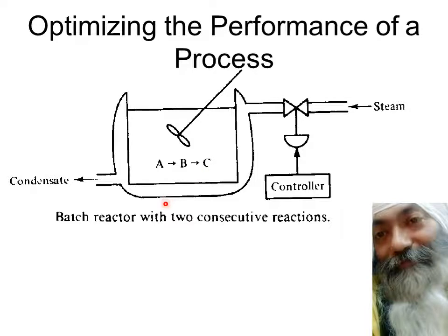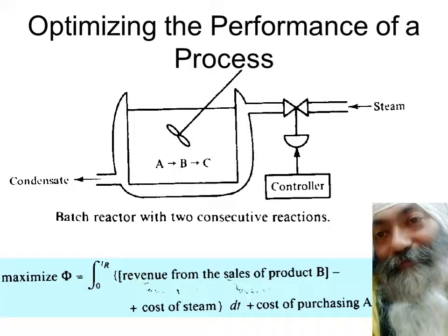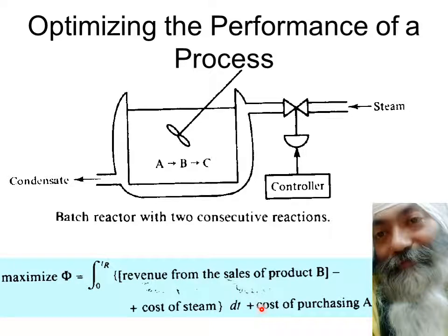Ultimately the profit we are going to get depends on what is the maximum amount of B we are able to get. We have to maximize this profit, which over a period of time is whatever revenue we get from the sale of product B, minus the cost of steam, and also minus the cost of purchasing A. From the revenue from the sale of B, we subtract the cost of steam and the cost of purchasing A. That will be the profit, and that profit needs to be maximized.